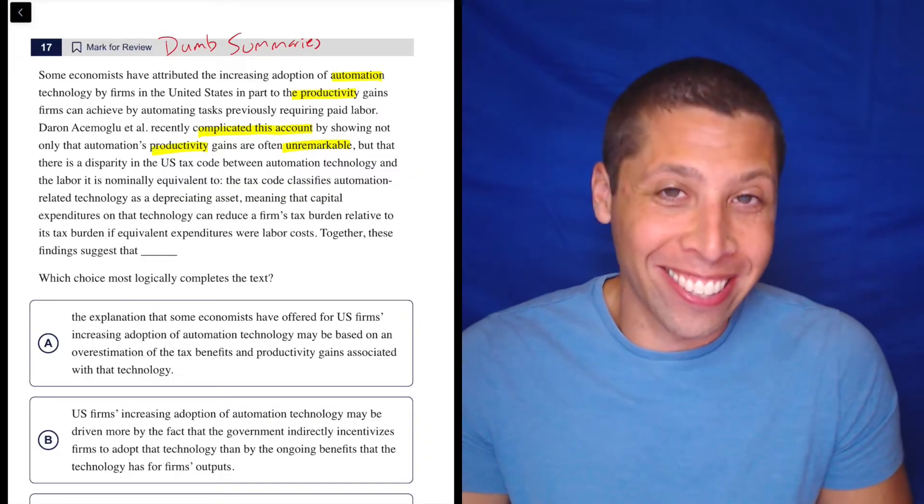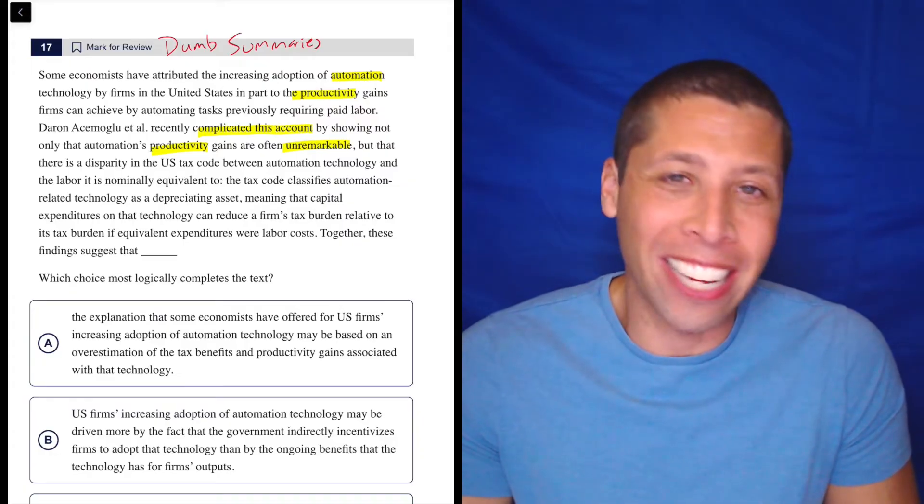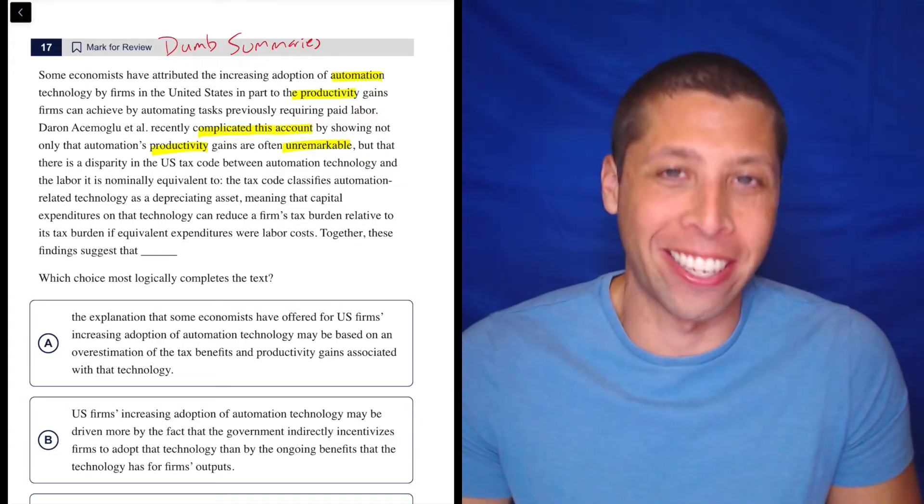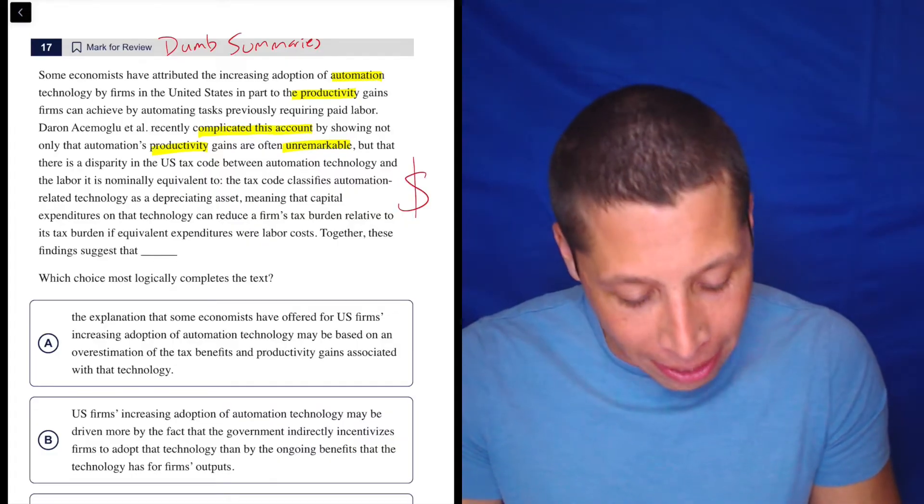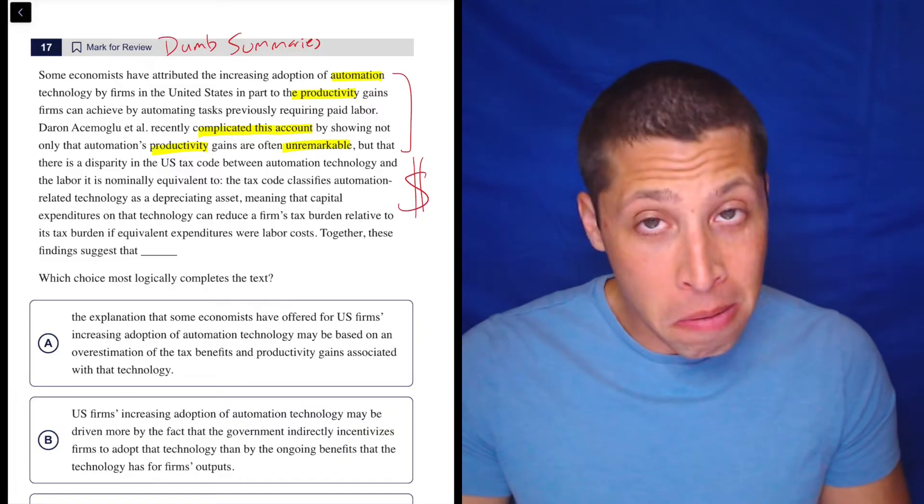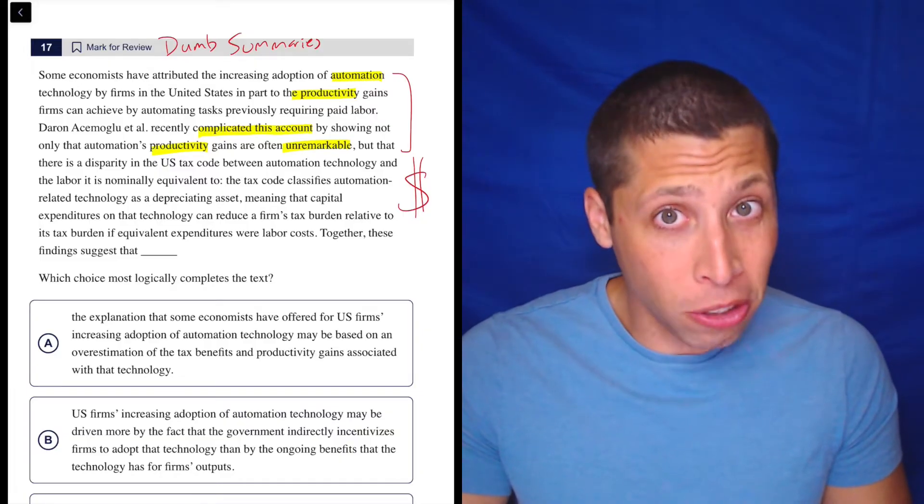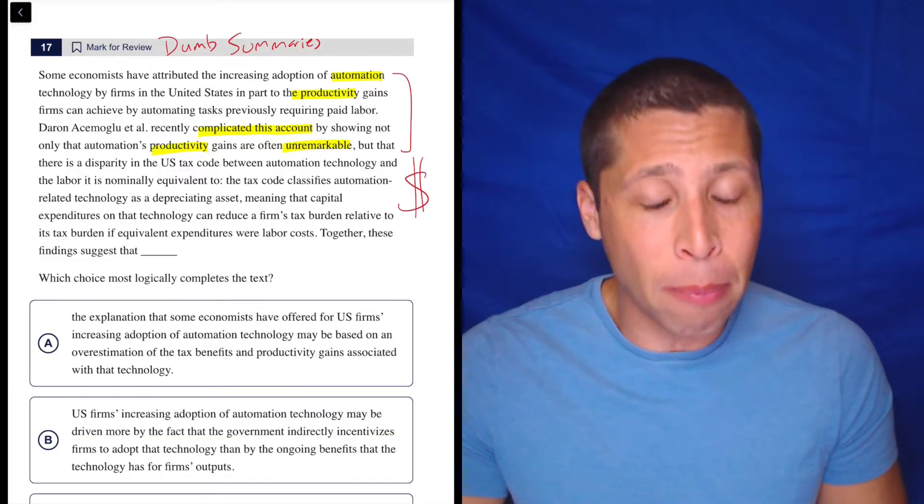I'm laughing because that's an insane sentence, and I know that 2% of SAT test takers are going to understand that. It's okay. You don't need to understand it. Basically, it's about money, right? And so where's my dumb summary? This part here, there are some hard words, but there are some easy words that you need to be able to recognize.